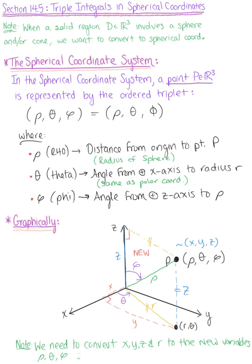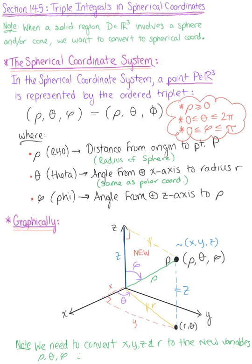Before we convert, note the restrictions on these new variables. Rho is a distance — the radius of the sphere — so rho must be greater than or equal to zero. Theta is the angle from the positive x-axis, with the same restrictions as polar coordinates: zero is less than or equal to theta, which is less than or equal to two pi. Phi is the angle from the positive z-axis to rho, restricted to zero is less than or equal to phi, which is less than or equal to pi. These three restrictions are critical to remember when evaluating triple integrals in spherical coordinates.